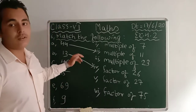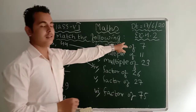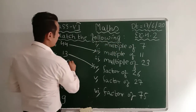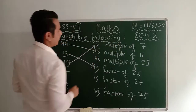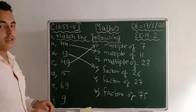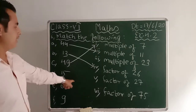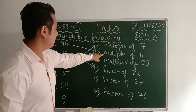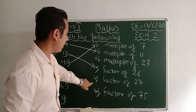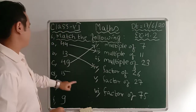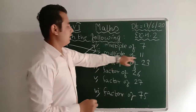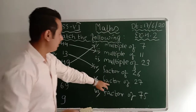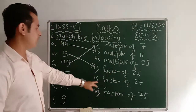Now 49: 49 equals 7 times 7, so 49 is a multiple of 7. That match is done.